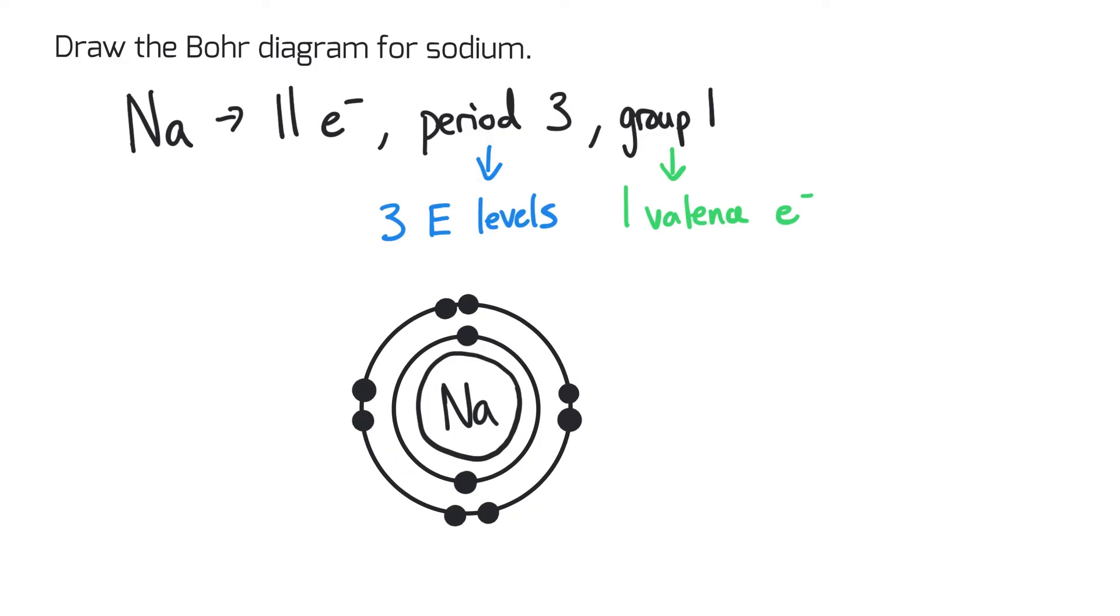And I fill 1 in each orbital before pairing. And in the third energy level, there is 1. Which makes sense because there's 1 valence electron.